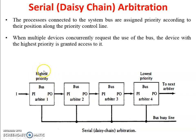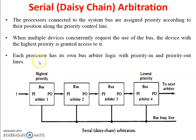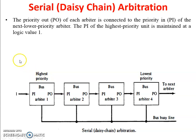Each processor has its own bus arbiter logic with priority IN and priority OUT lines. A signal passes from the priority OUT of one arbiter to the priority IN of the next lower-priority arbiter. The priority OUT of each arbiter is connected to the priority IN of the next lower priority arbiter. In the figure, arbiter one's PO (priority out) is connected to arbiter two's PI (priority in), and so on.